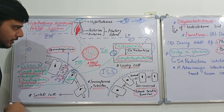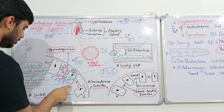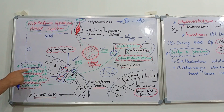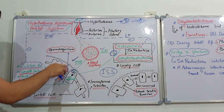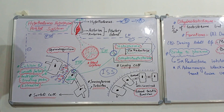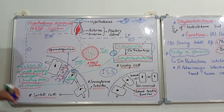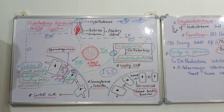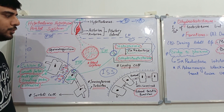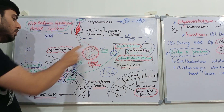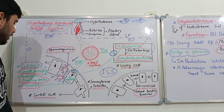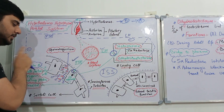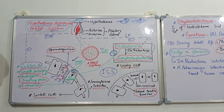FSH and testosterone stimulate the Sertoli cells to release certain hormones. One is growth factors, which are involved in various steps of spermatogenesis. Another important secretion is androgen-binding protein, which binds to testosterone and increases its levels within the seminiferous tubules, because a high amount of testosterone is required for spermatogenesis to take place.